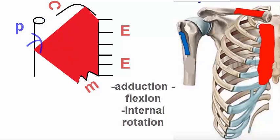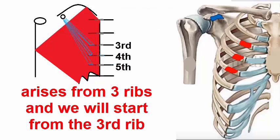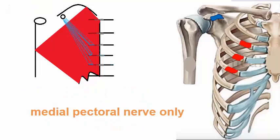Next is the pectoralis minor. It is a small triangular muscle lying under the middle third of the pectoralis major. It arises from three ribs, starting from the third rib, just lateral to their costal cartilages, and inserts into the coracoid process of the scapula — specifically its medial border and upper surface.